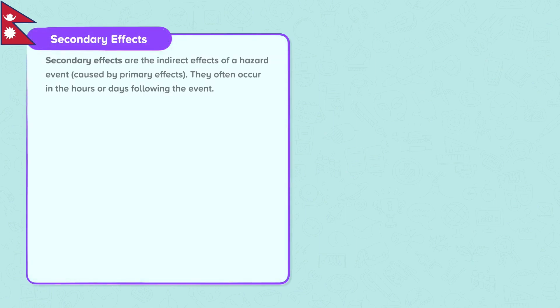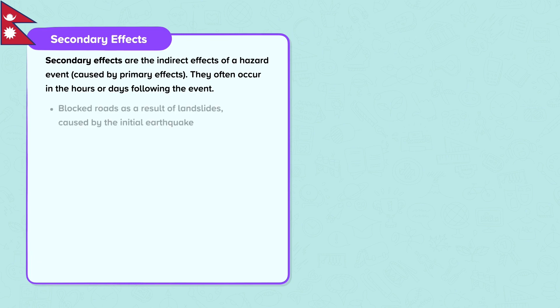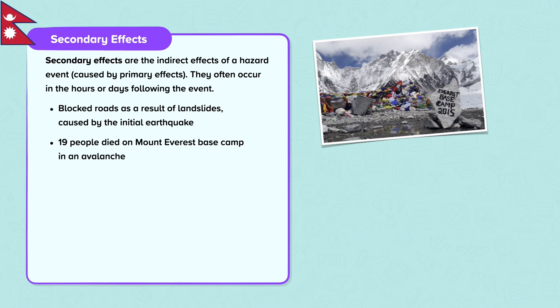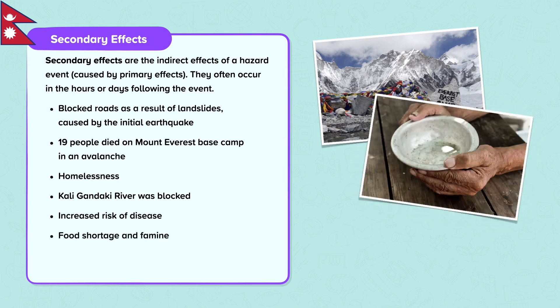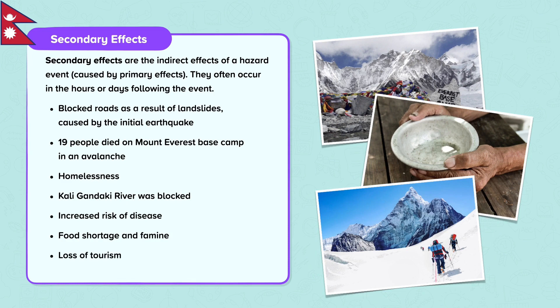Secondary effects are the indirect effects of a hazard event, caused by primary effects; they often occur in the hours or days following the event. In the Gorkha earthquake, these included blocked roads as a result of landslides. 19 people died on Mount Everest Base Camp in an avalanche caused by the earthquake. Homelessness occurred due to thousands of homes being damaged or destroyed. The Kali-Gandaki River was blocked by a landslide, creating a flood risk for nearby villages and towns. There was an increased risk of disease in displacement camps due to contaminated water and poor living conditions. 1.5 million people were at risk of food shortage due to damaged infrastructure limiting food supplies. A loss of tourism occurred, which Nepal relies on heavily for its economy, due to damage to infrastructure, particularly transport links.